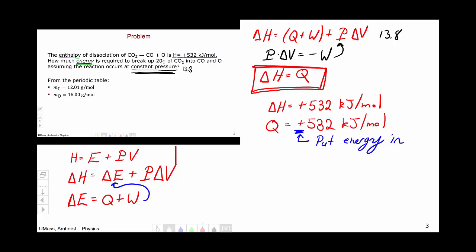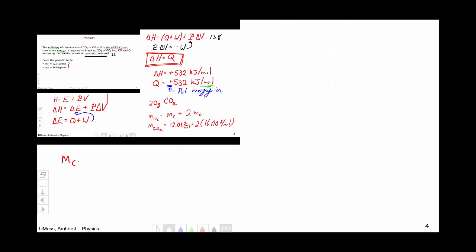Now we're finally in a position to get some numbers. So we know that we have 20 grams of CO2, but we need a quantity in moles. So we need the molar mass of carbon dioxide. The molar mass of carbon dioxide will be the molar mass of carbon plus twice the molar mass of oxygen because there's two oxygens. So the molar mass of carbon dioxide is 12.01 grams per mole plus 2 times 16 grams per mole, which gives us a total molar mass of carbon dioxide of 44.01 grams per mole.